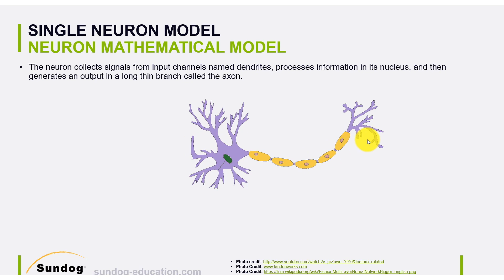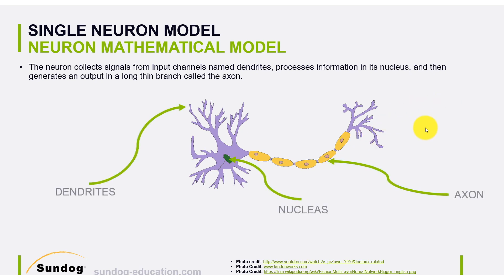Let's model that mathematically. Once we model just one neuron mathematically, we can build our own mini brain. As mentioned, we have a couple of dendrites — these are the inputs. We have our nucleus where the processing happens, and we have our axon, which is the output.